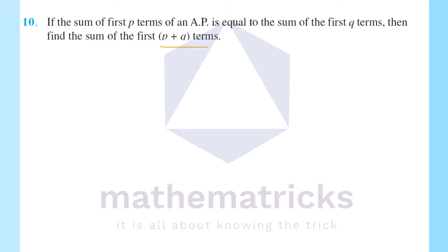Here, the sum of the first p terms of an AP equals the sum of the first q terms of an AP. The sum of the first n terms of an AP is given by the formula: Sn = n/2 into (2a + (n-1)d).